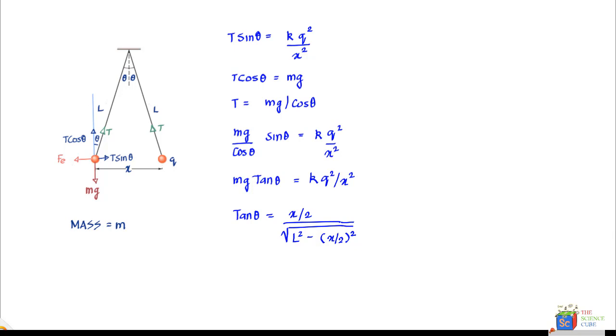This makes x by 2 whole square even smaller, in which case we can write tan theta equals x upon 2 divided by L, because this component becomes zero and under root of L square becomes L. So if we put the value of tan theta equal to x by 2 upon L in this equation, we get mg into x upon 2L.